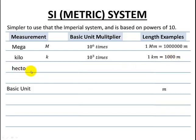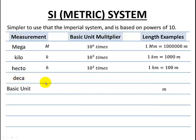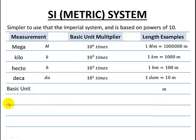Another prefix, hecto — not commonly used, abbreviated H — is 10 to the 2, or a hundred times bigger. So one hectometer is a hundred meters. Then deca, abbreviated DA, is 10 to the 1, or just 10 times bigger than our base unit, so one decameter is 10 meters. We can see the powers of 10 coming out in the multipliers and in the statements of equivalences. Note that I have 10 to the 1, 10 to the 2, 10 to the 3, then jump to 10 to the 6 — there are prefixes for 4 and 5, just not used as often, so they're not included in this table.